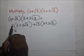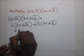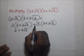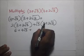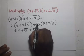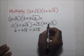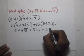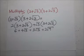Then 2 times 2√3 is going to give us plus 4√3. Then we have √3 times 3, which is 3√3. Then √3 times 2√3 is going to become plus 2 times (√3 × √3). √3 × √3 is 3, so that gives us plus 2 times 3, which is 6.